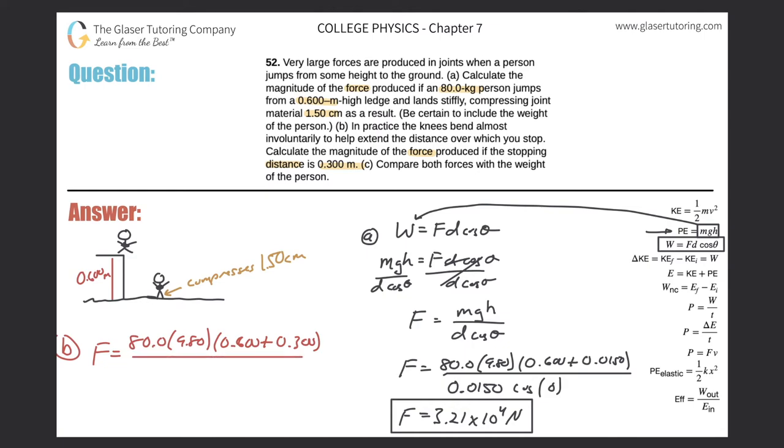And now the new stopping distance is going to be also 0.3, times the cosine of 0. So let's plug that into the calculator. We have 80 times 9.8 times parenthesis 0.6 plus 0.3, all divided by 0.3.